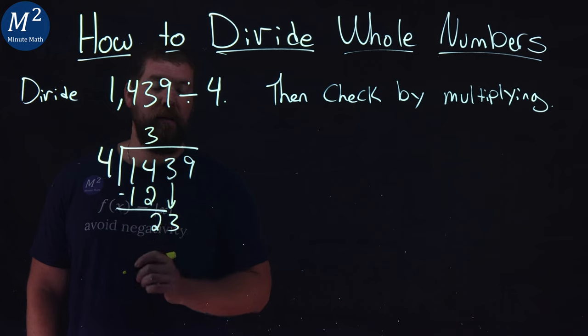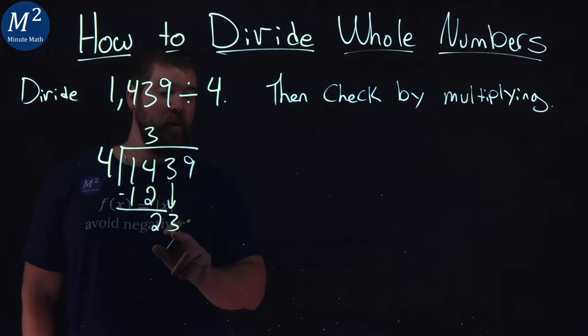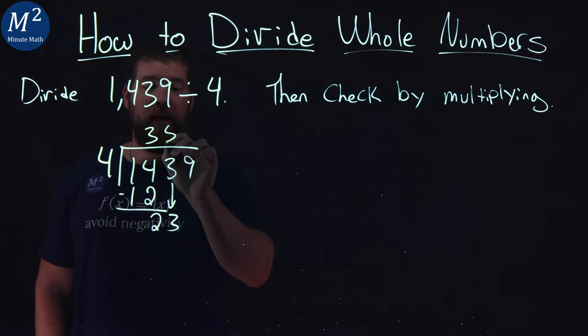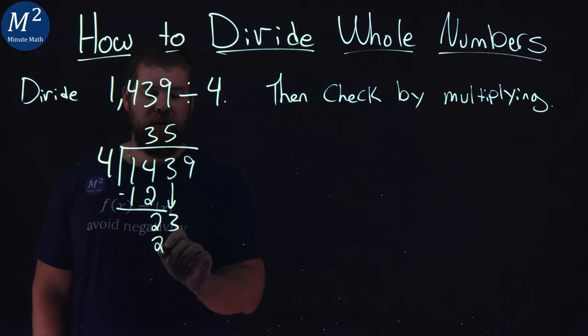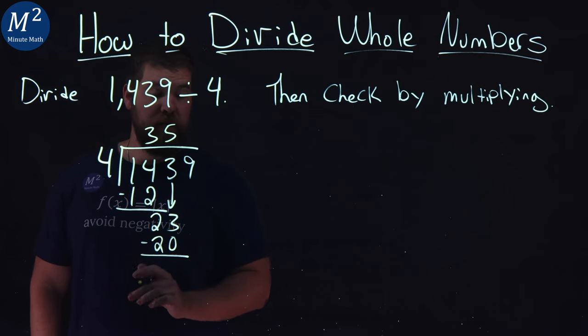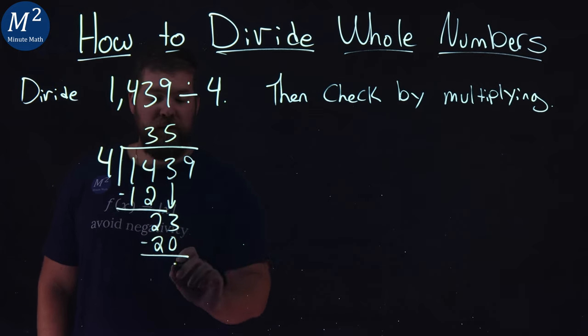Bring down the next one, the 3. 4 goes into 23, I'm going to say 5 times, because 5 times 4 is 20. Subtract them. 23 minus 20 is 3.